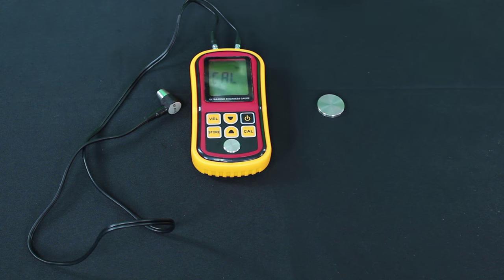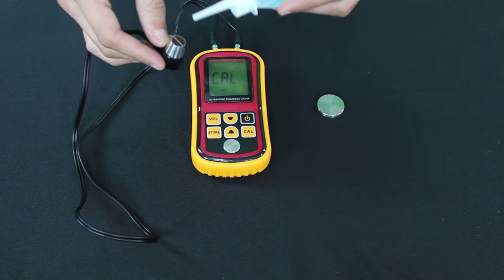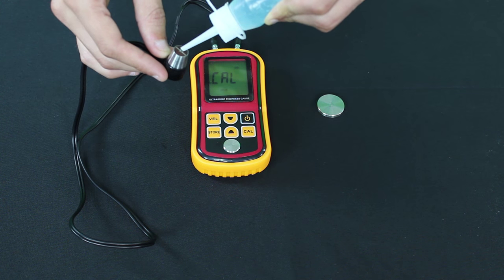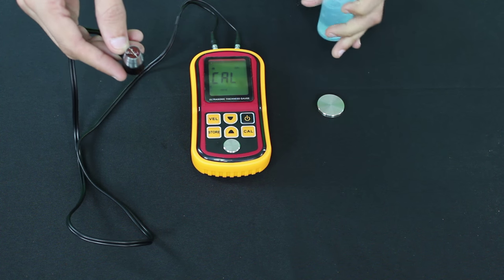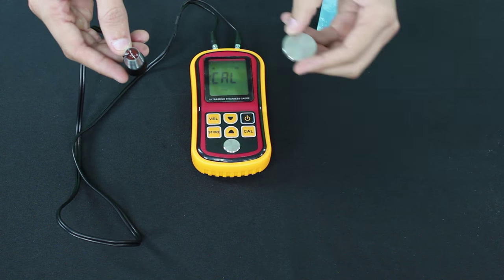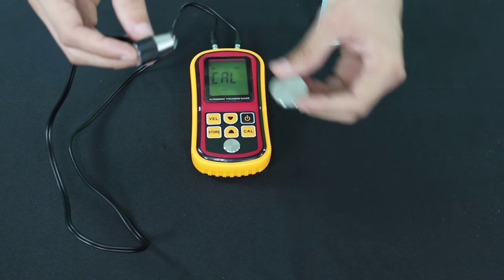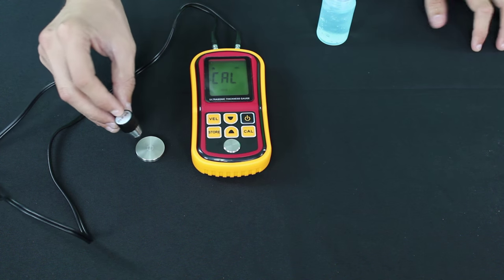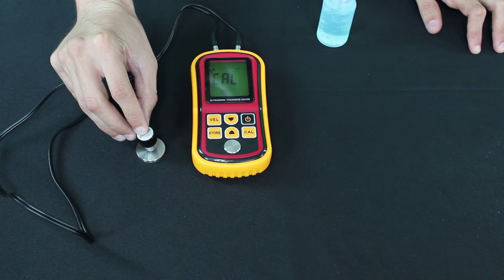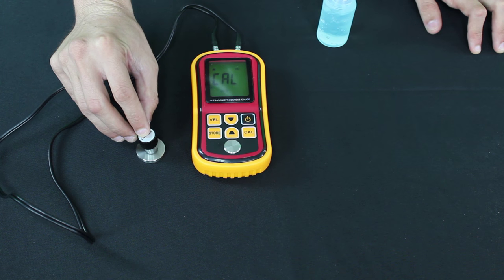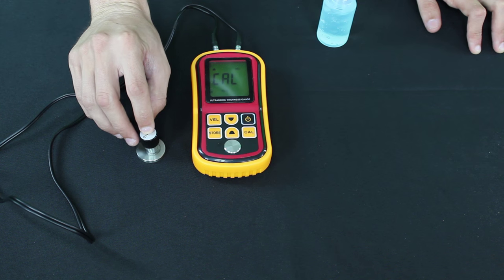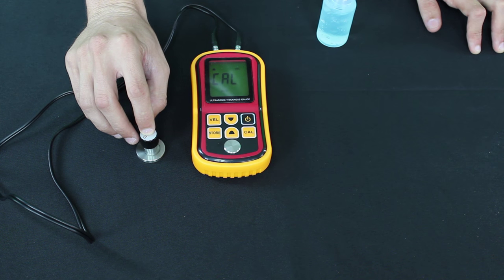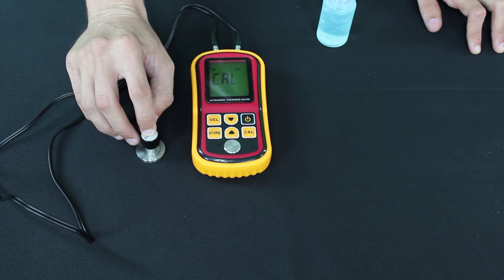The next step is to put a nice bead of gel on the sensor tip, about a dime size. Next thing you want to do is get your calibration chip and put the sensor head on the chip. This chip measures four millimeters thick. So once the calibration tool reads four millimeters, we know that we have calibrated the thickness gauge.